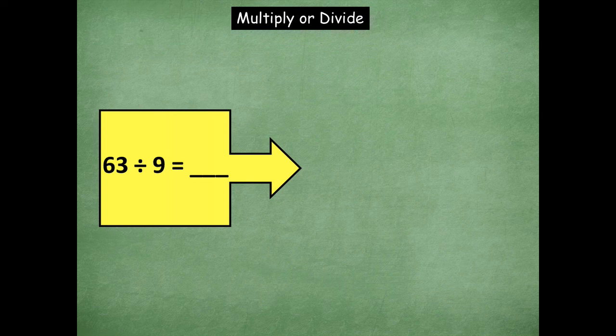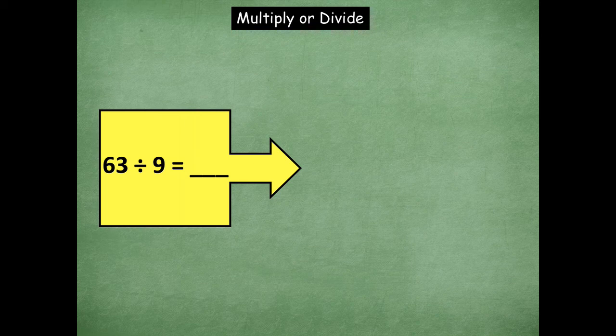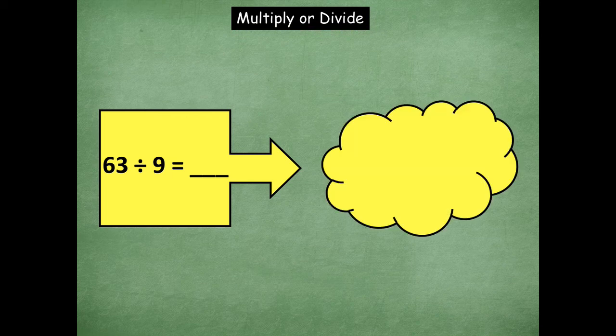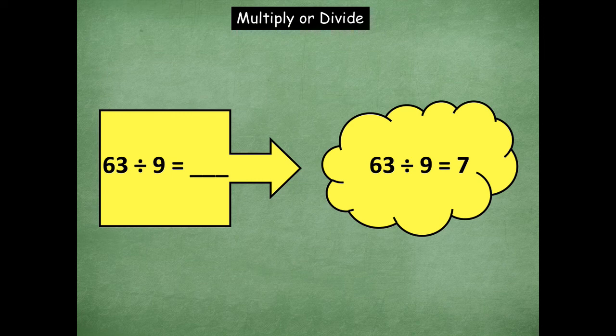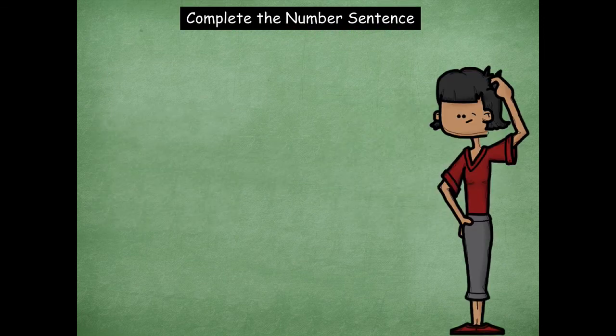63 divided by 9. You can skip count by 9s until you get to 63 if you need to use your multiplication. So 63 divided by 9 equals 7. Okay. So awesome job with that, friends. Great job with multiplying or dividing.